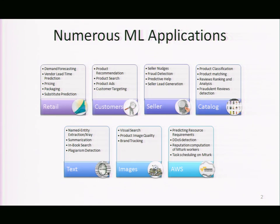We also use machine learning to predict the lowest comparative prices for a product. At Amazon we like to offer the lowest prices, but we can't crawl all millions of products on the web, so we use predictions. There's also interesting work on co-purchase patterns to find substitute products — things we could show a user when we're out of stock — which leads to a much better customer experience.